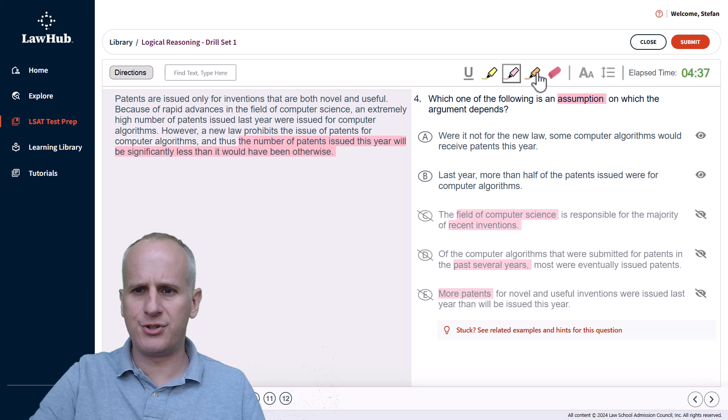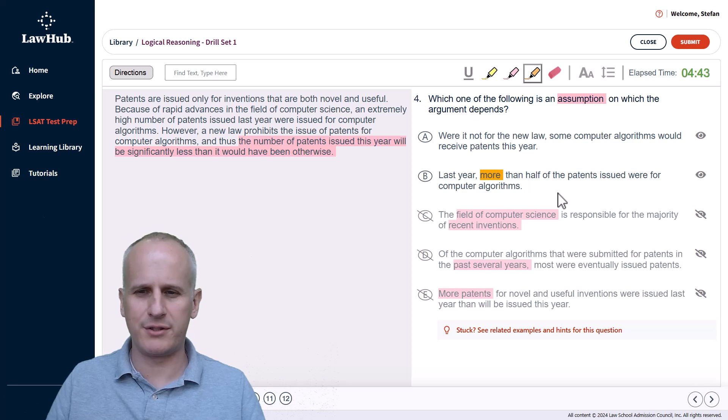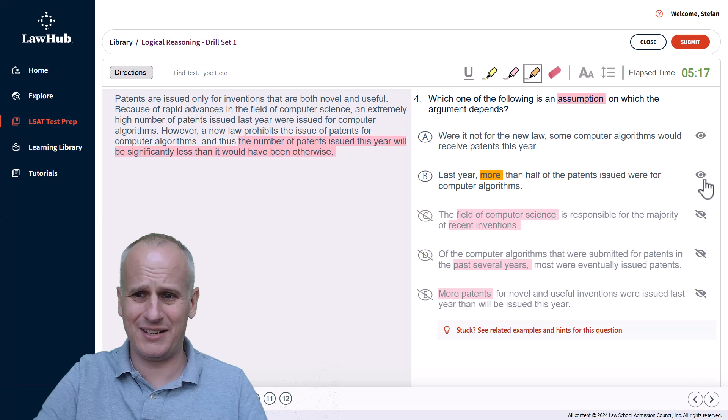Starting with choice B, I'm going to just change my highlighting tool color here so I can see - we basically want to do the opposite of more. So instead of saying more than half, not more than half or less than half. It could be pretty ambiguous what that means. So we just said last year, not more than half of the patents issued were for computer algorithms. Okay, so it wasn't fully half. But I mean, if we take away 40%, that's a pretty significant decrease, still the conclusion logically follows. So when we take away choice B, the argument still stands. So I'm going to eliminate that because when we negated it, the argument didn't fail.